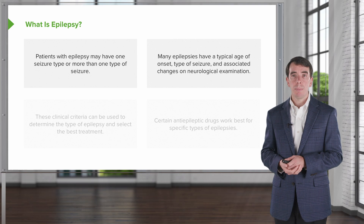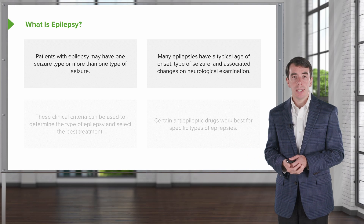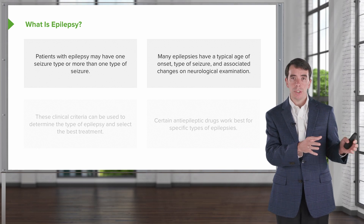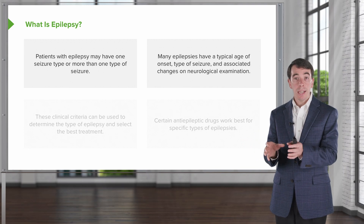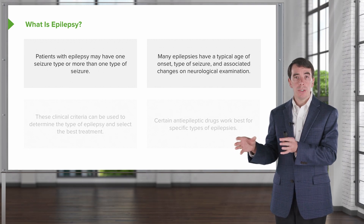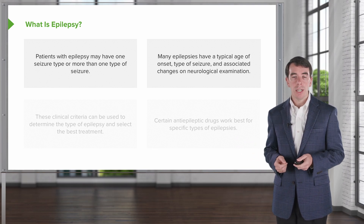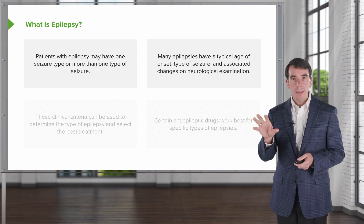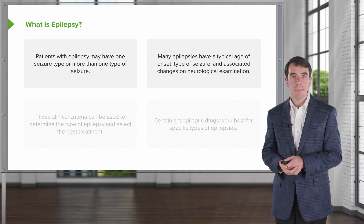Many epilepsies have a typical age of onset, type of seizure, and associated neurologic examination findings. So when we're moving from a diagnosis of seizure to epilepsy, we're not just looking at the type or types of seizure that the patients have. We're also looking at the onset of the seizures and any deficits on their neurologic exam, and that will help us to make a diagnosis of a specific type of epilepsy.